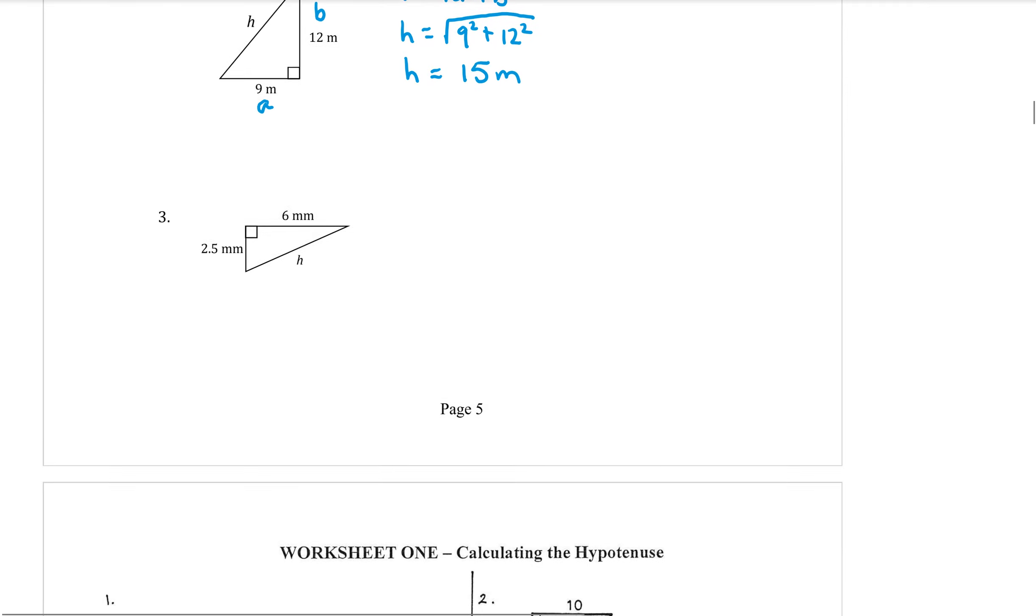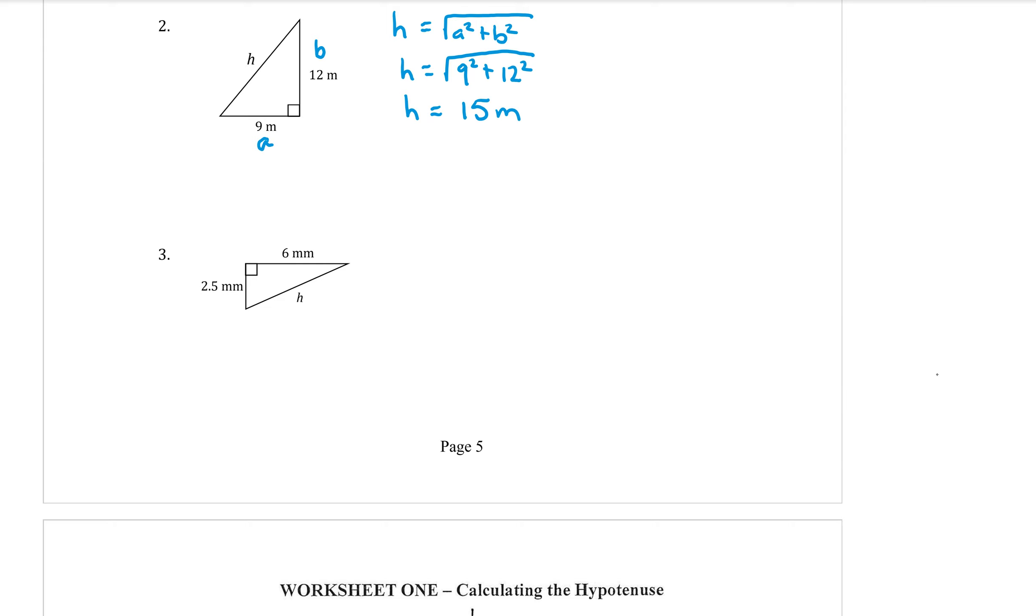And one more. To find the hypotenuse, first of all, write the formula down. Okay, now for this question, I'm going to call the a the 2.5 and the b the 6. So in the formula, that will be h equals big square root 2.5 squared plus the b, which is 6 squared.